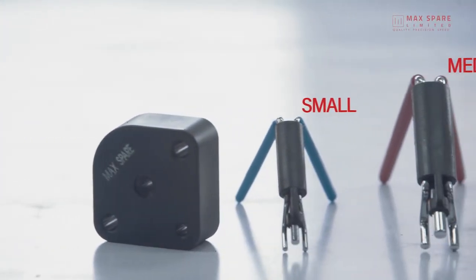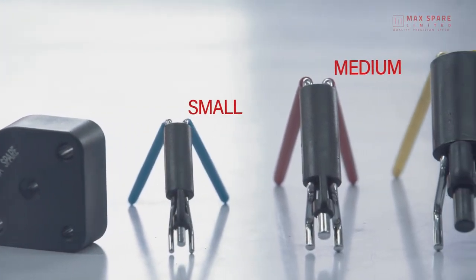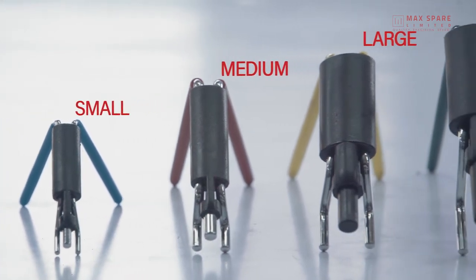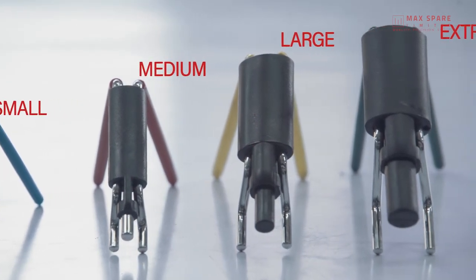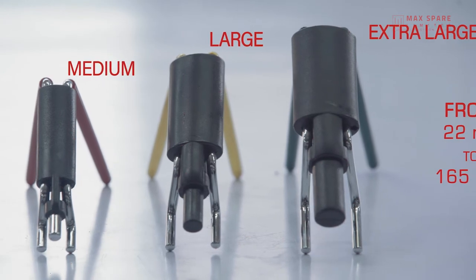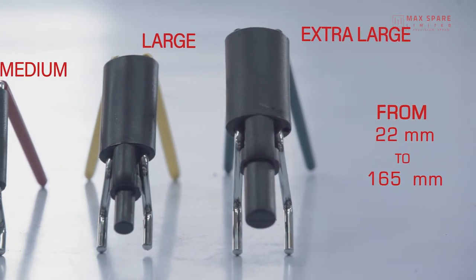The seal twister consists of four sizes: small, medium, large, and extra-large. Four sizes ranging from 22 millimeters to 165 millimeters of gland inner diameter.